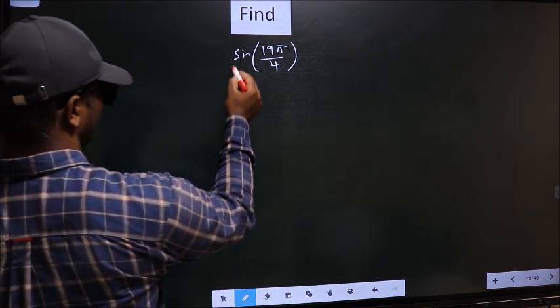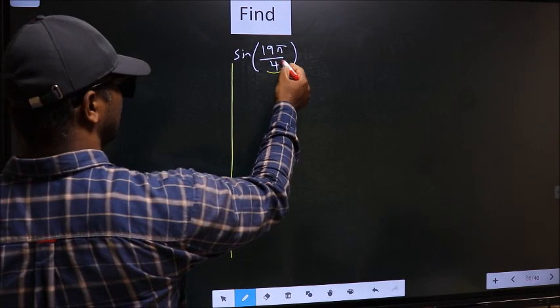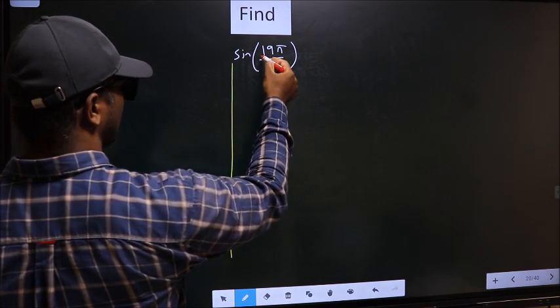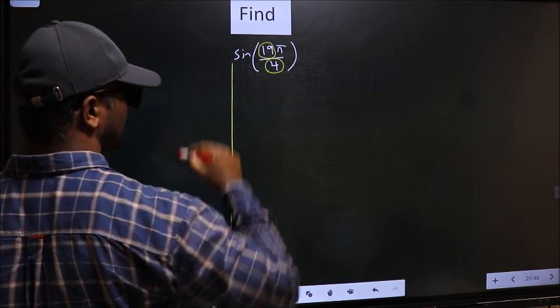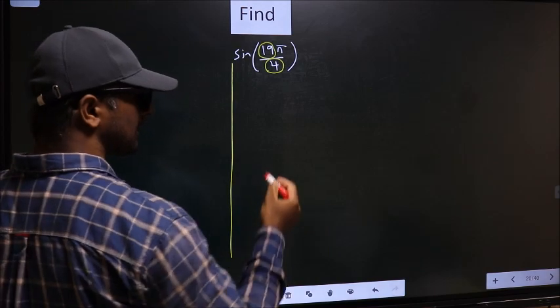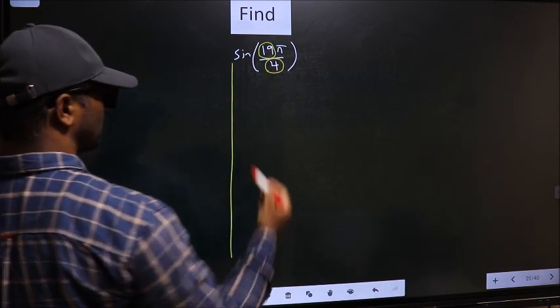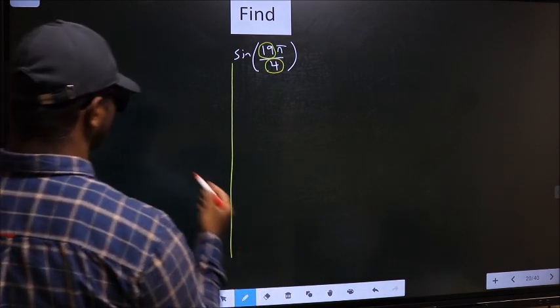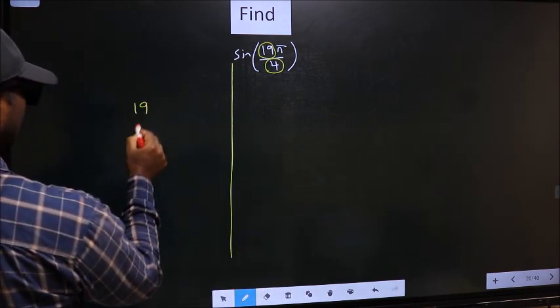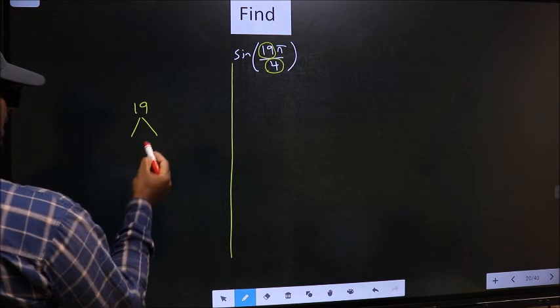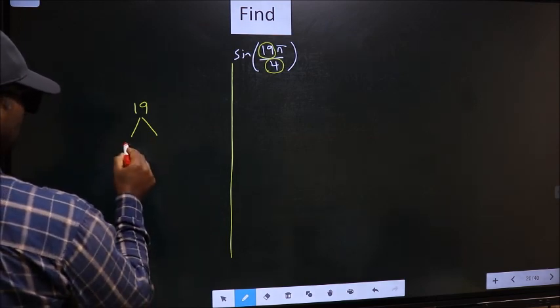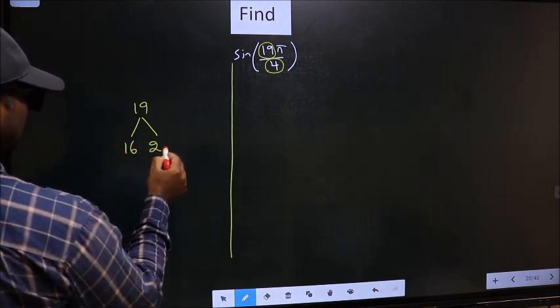See, in the denominator we have 4 and in the numerator 19. Now you should check 19 is close to which multiple of 4. What I mean is, 19 - here you write multiples of 4, that is 16 and 20.